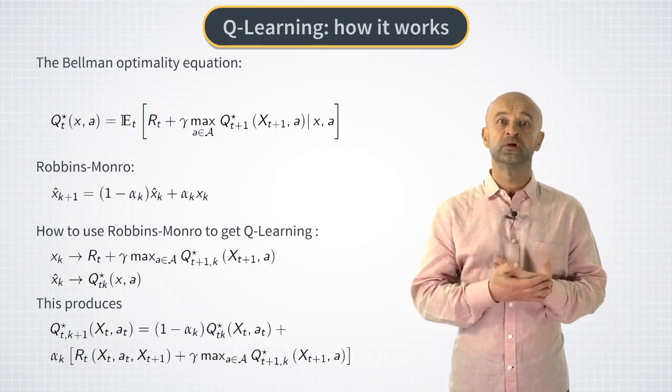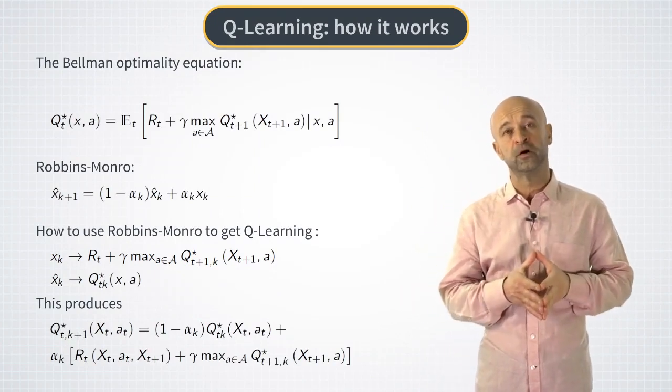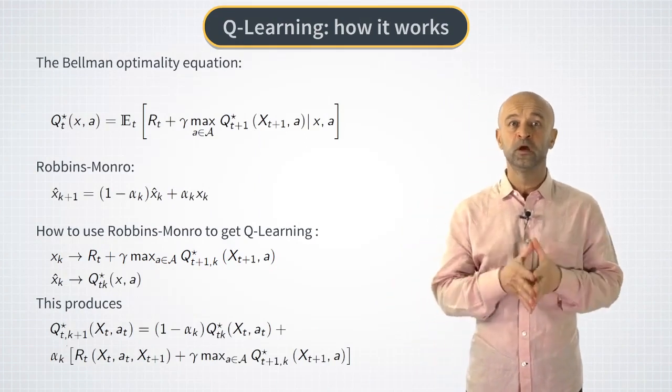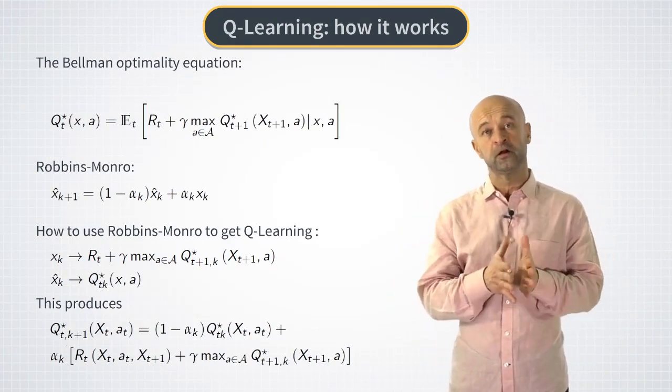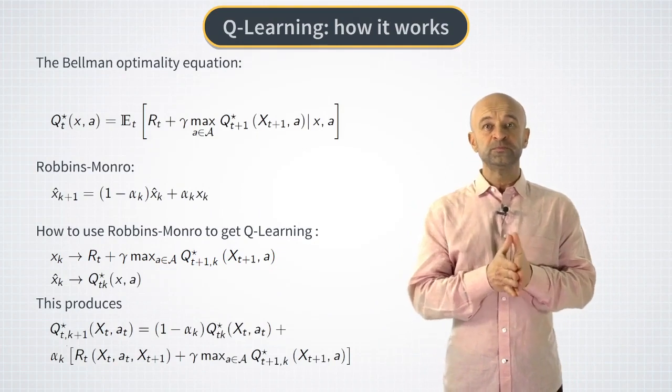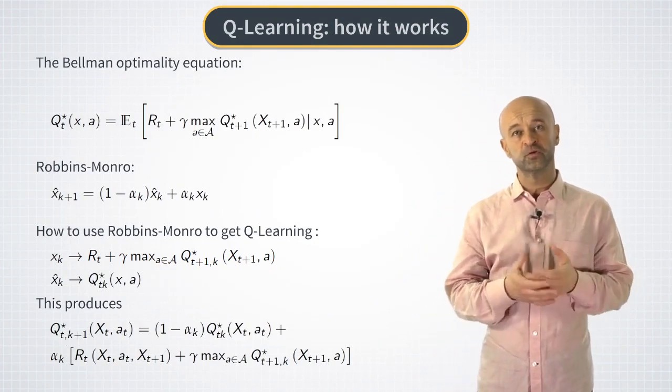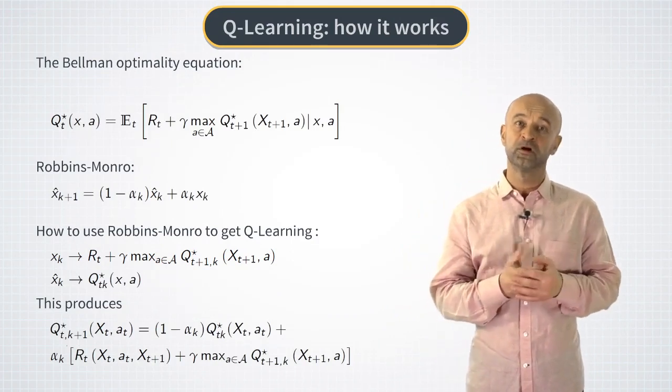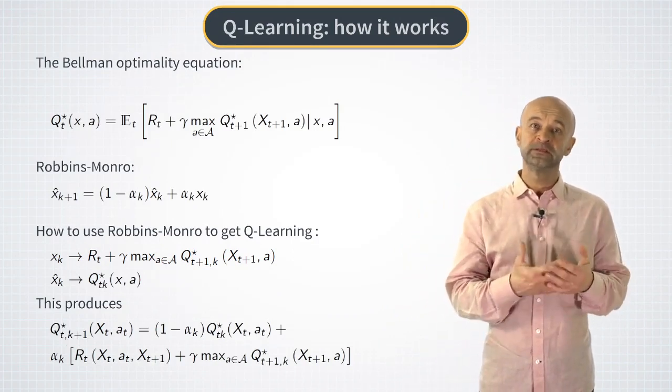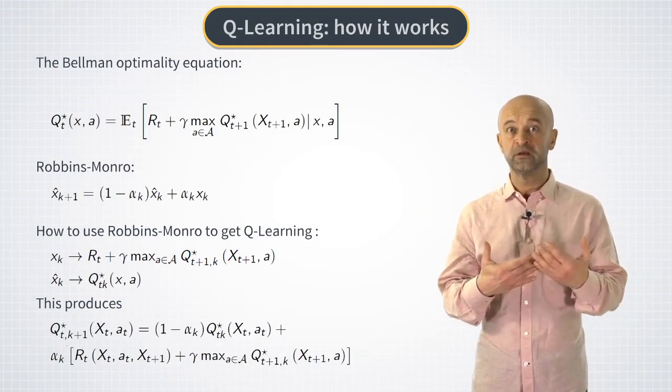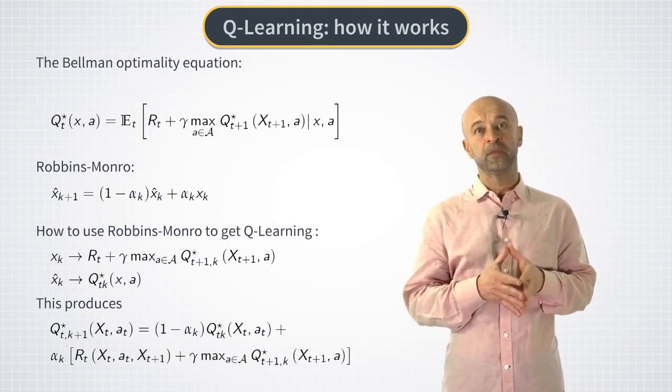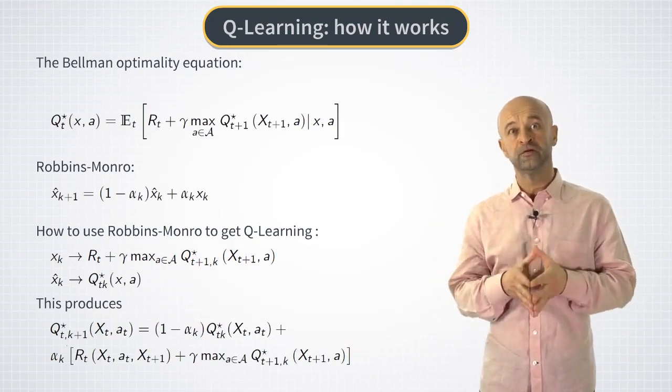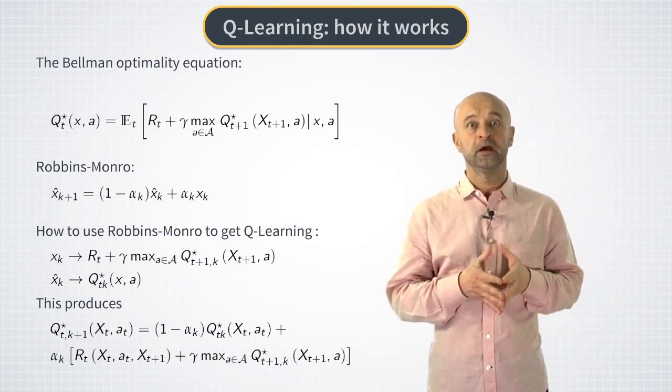Now, the Q iteration rule shows two very important things about Q learning, namely that it's both a model-free and off-policy algorithm. This means that it does not make any assumptions on a true data generating process that produces the current observation. It simply takes it as given and updates the action value function for a given state action node xt and at.